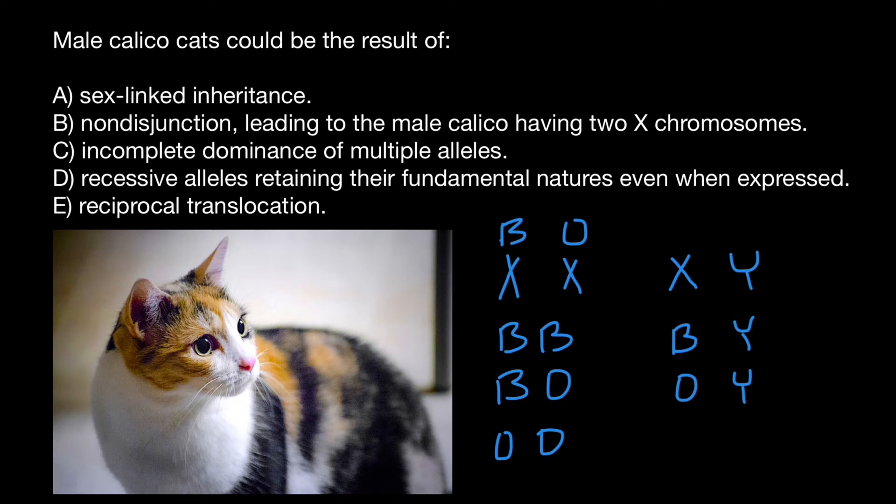As you see, in males, we cannot see this genotype, which is black, orange, and white base. So if we are told that a male cat belong to this genotype, that means that this cat, male cat, has two X chromosomes and Y chromosome. And this is result of non-disjunction.